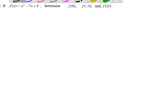If f(x) equals x squared minus 7x plus 4, determine f(0), f(-3), and f(2t).